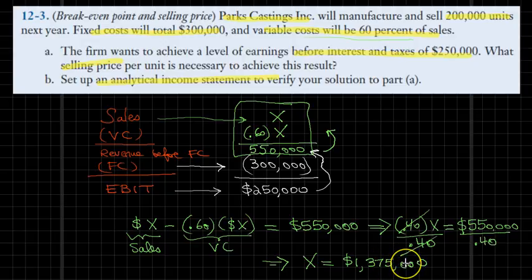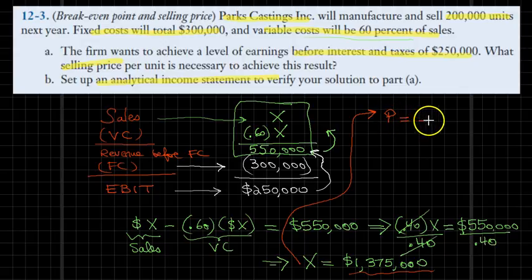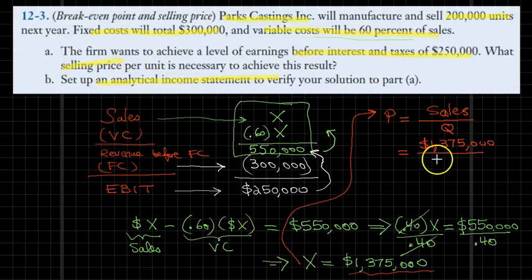This is total sales. In order to get a selling price for each of our items, all we need to do is to divide this number by the quantity sold, which is basically 200,000 units. So let me actually create some space here. The price per unit is equal to sales divided by the quantity Q. From here we get that sales of $1,375,000 and the quantity of 200,000 units, and finally the price comes out as our unit price: $6.875.